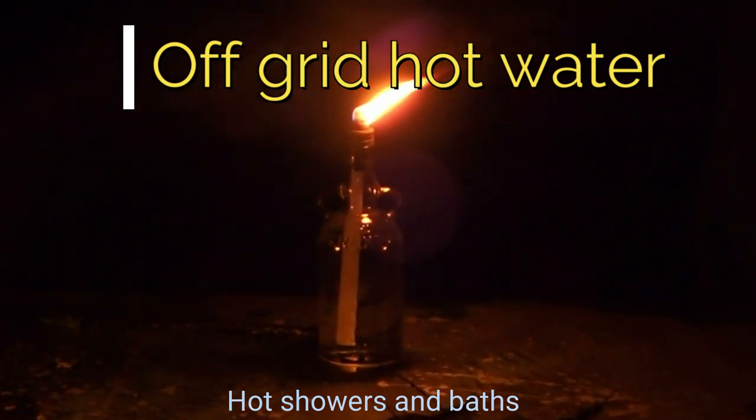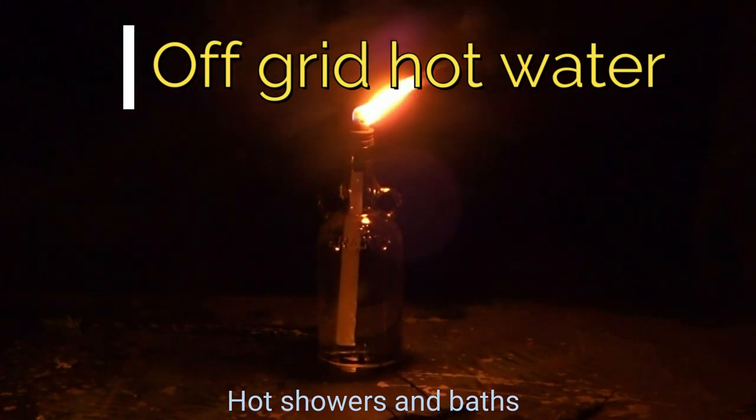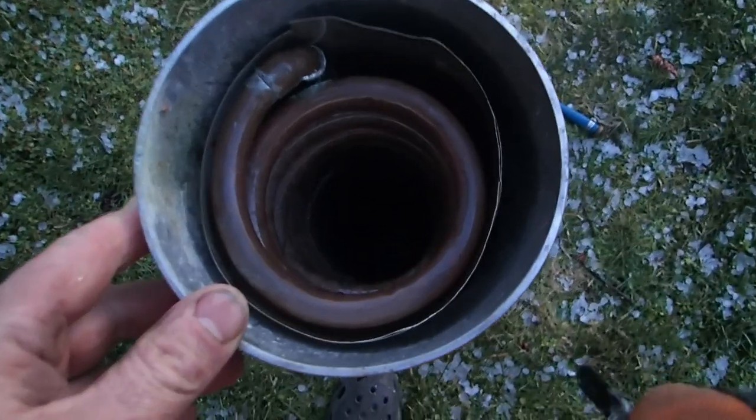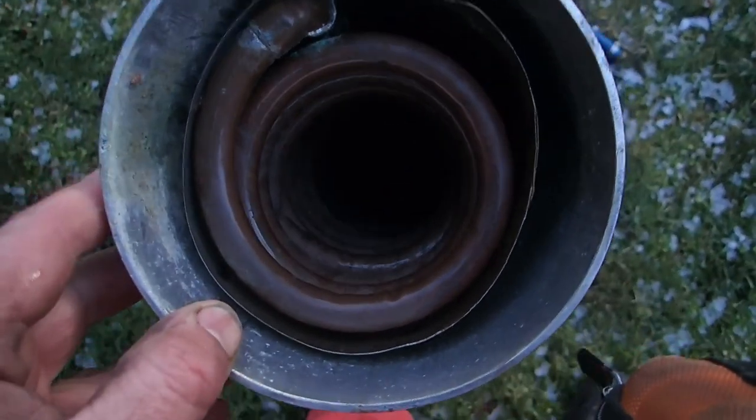There's the heat exchanger. You can see there's about 35 feet of 5/8 inch copper tube spiral wound, wrapped in some stainless sheet metal that's surrounded by fire blanket.